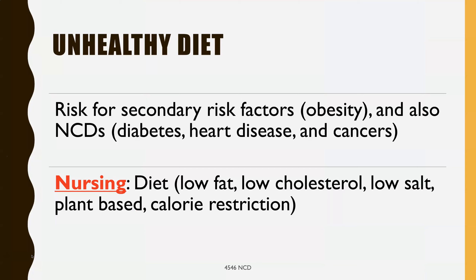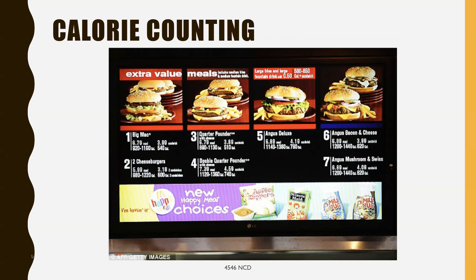Having an unhealthy diet is a secondary risk factor for obesity and NCDs such as diabetes, heart disease, and cancer. For nursing, it's important to understand what a healthy diet is: low in fat, low in cholesterol, low in salt, predominantly plant-based rather than meat-based, and with calorie restriction. Something to consider is whether calorie counting works — we now see calorie counts on menus, and it's worth discussing whether this is an effective strategy.